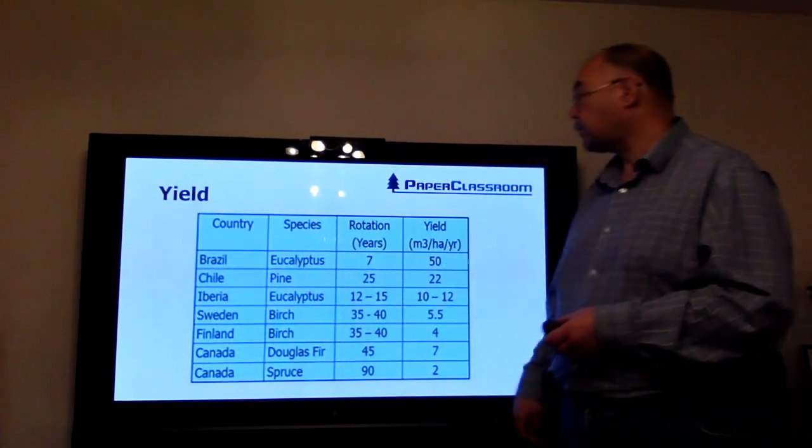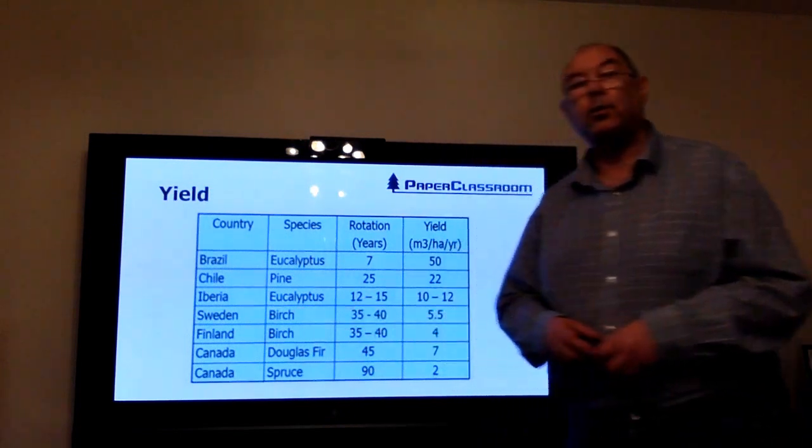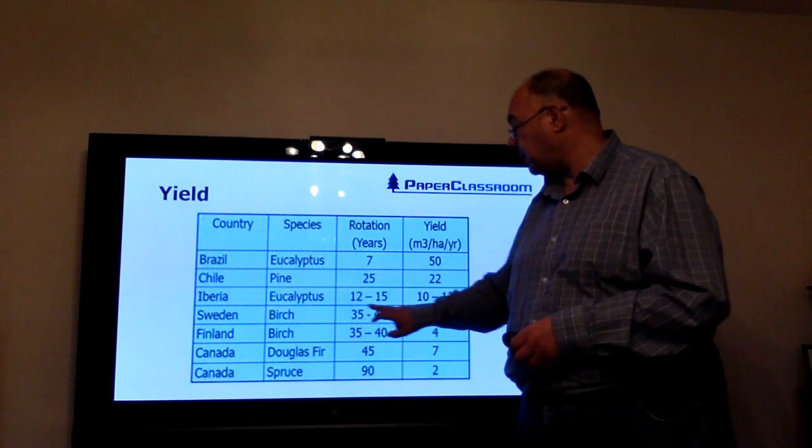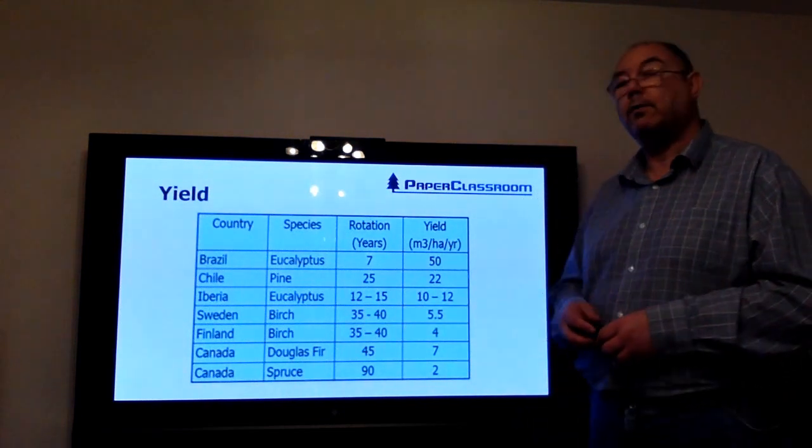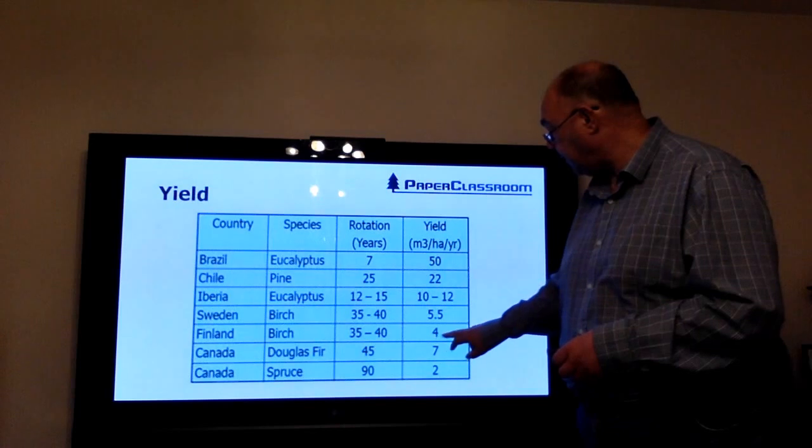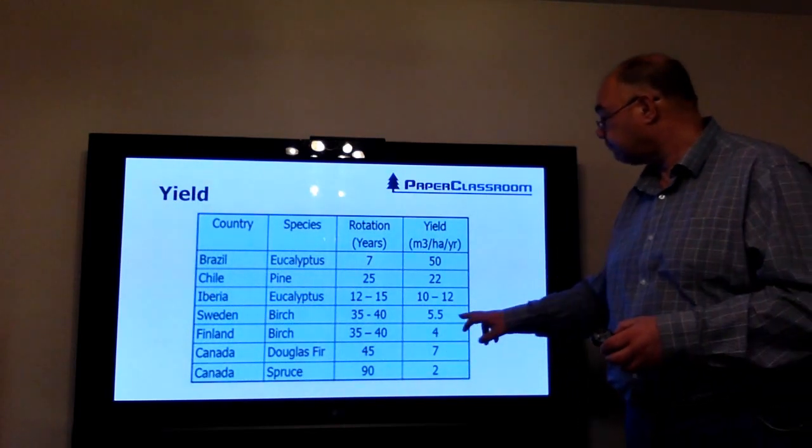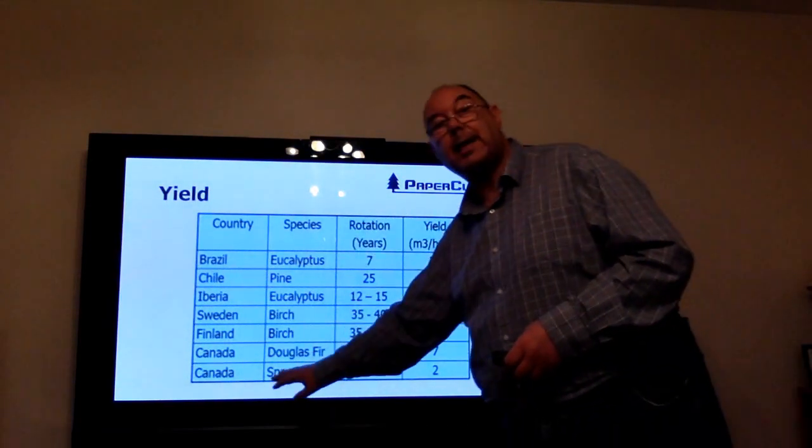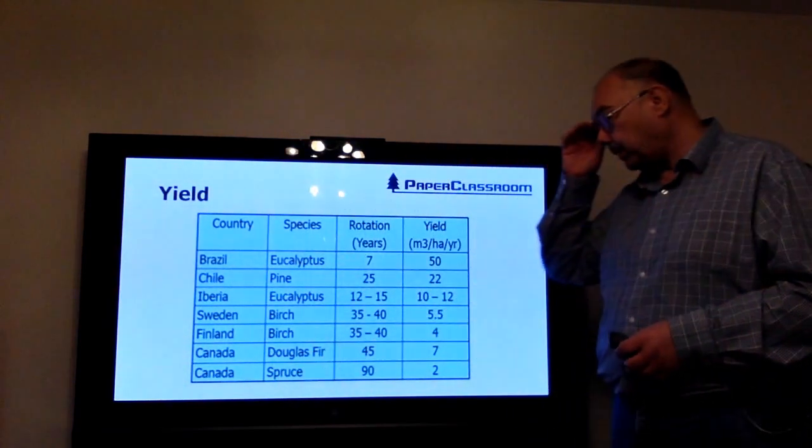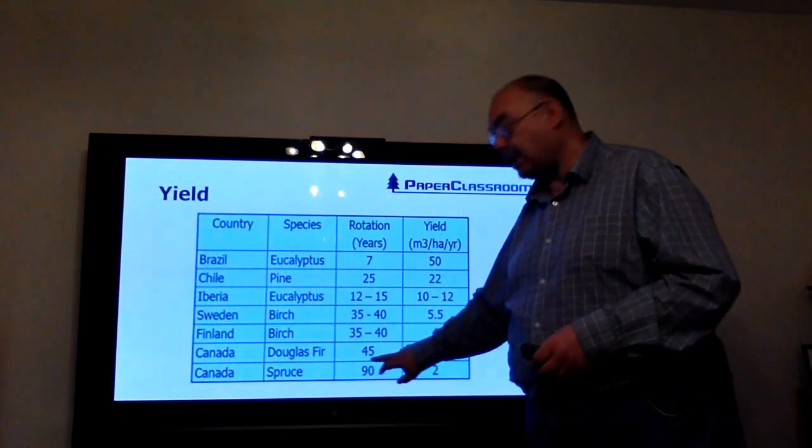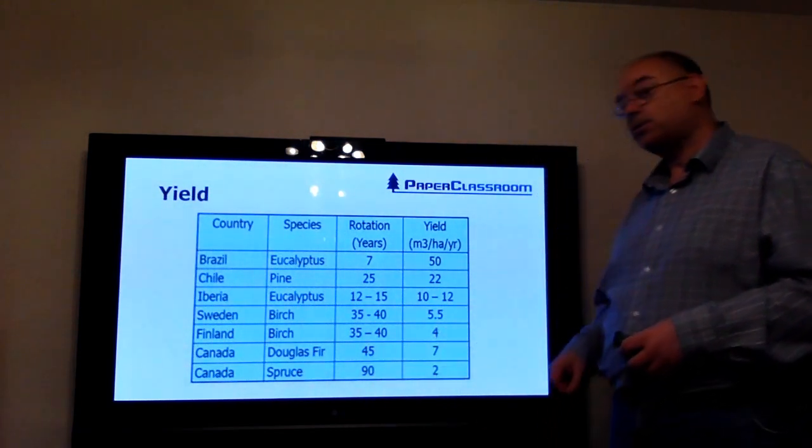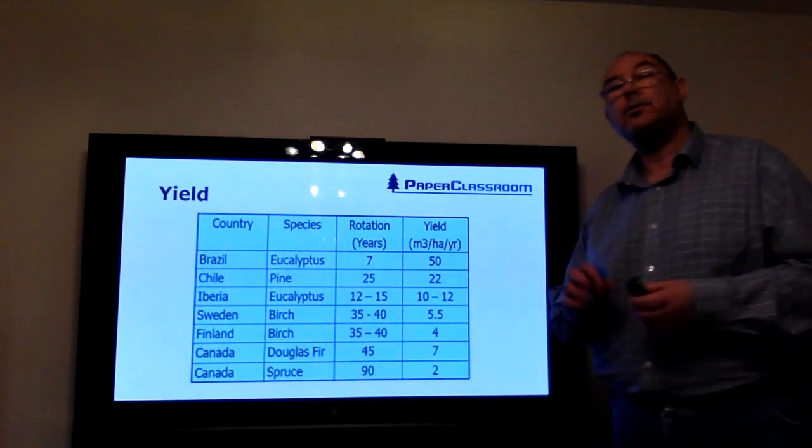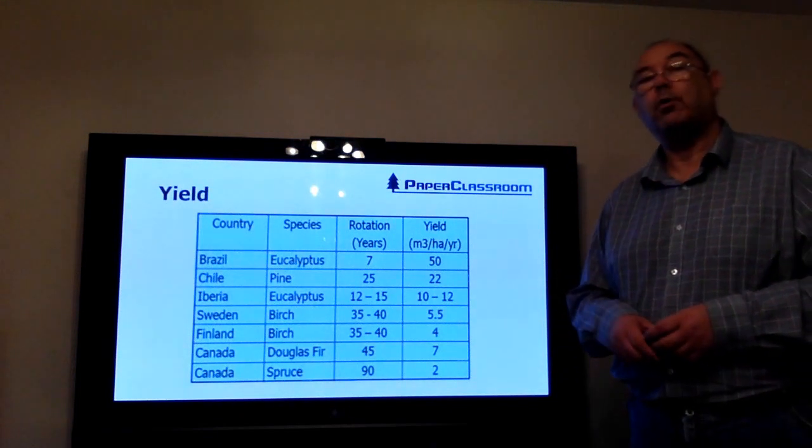If you look at colder climates like Sweden, for example—Sweden is well known for growing its birch trees rather than eucalyptus. Rotation: 35 to 40 years, producing only 4 cubic meters per hectare per year. And when you get all the way down to Canada, quite cold up in Canada—rotational time of 90 years. So you're planting for your grandchildren and great-grandchildren, producing a yield of only 2 cubic meters of wood per hectare per year.